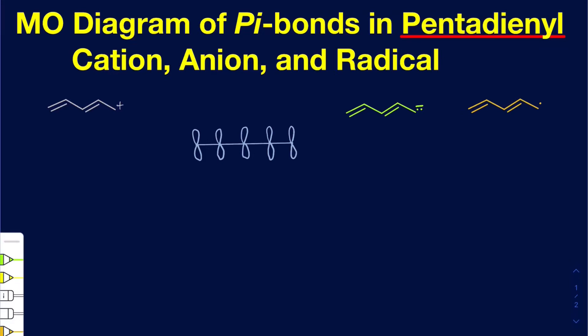Hello everyone. In this video, I'm going to be talking about how to draw molecular orbital diagrams for a pi bond system in the case of conjugated alkenes.